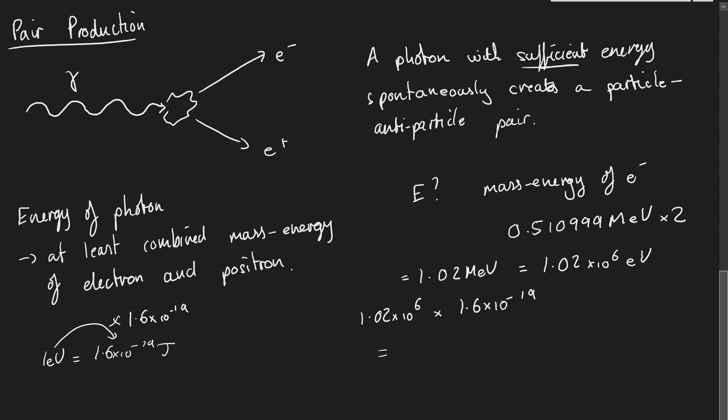And this is going to give me my answer in joules, which is 1.64 times 10 to the minus 13 joules. And so now, just using the data that we're given, you can calculate that the absolute minimum energy that this photon has to have in order for this pair production to happen is going to be 1.64 times 10 to the minus 13 joules.